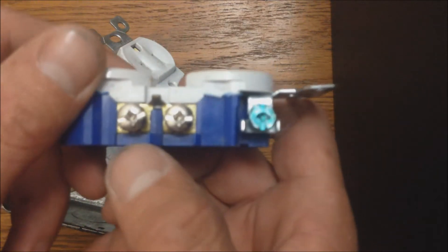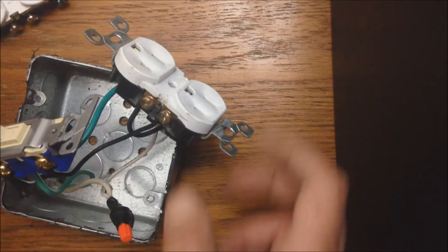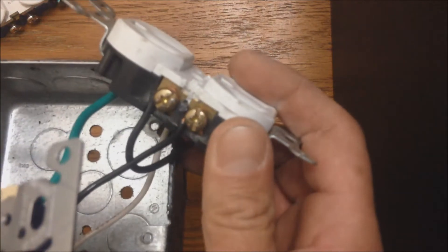There's a little tab here that you can actually break off and that separates the outlets. You break them off on both sides, obviously for the neutral and the hot. So that's what we've done here on this outlet.